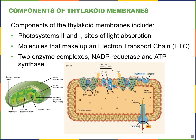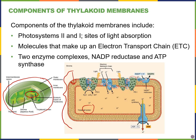We have our chloroplast here, and we're looking at the thylakoid and the thylakoid membrane. Here is an example of one of those thylakoids — this is the thylakoid membrane. Inside we have the lumen of the thylakoid, and the outside is the stroma, which is the liquid portion within the chloroplasts. What we're going to see within the thylakoid membrane are photosystems 2 and 1.